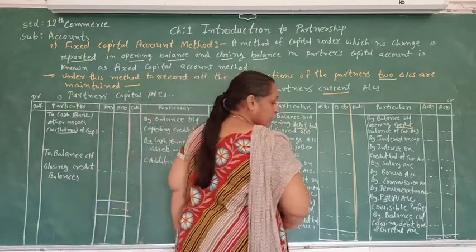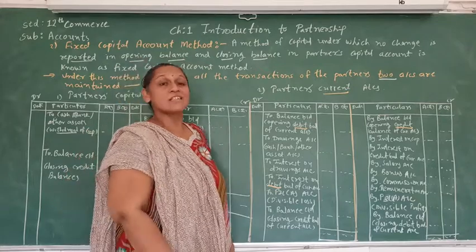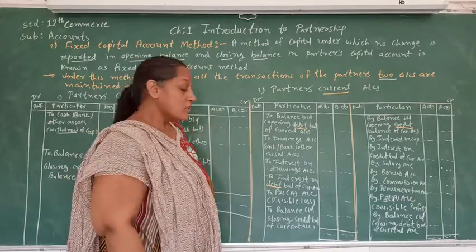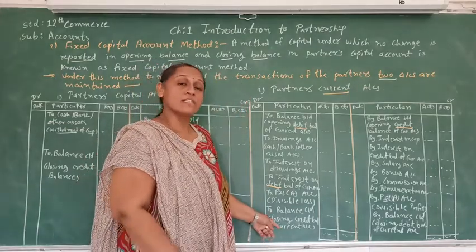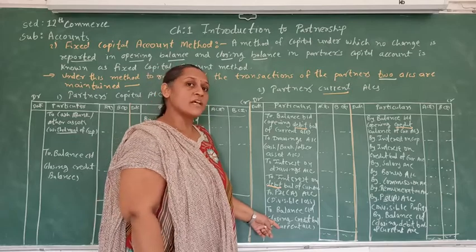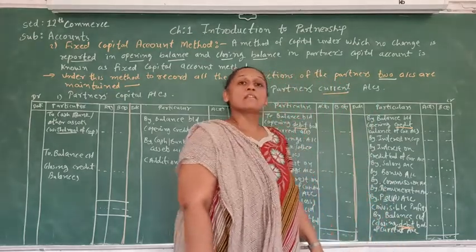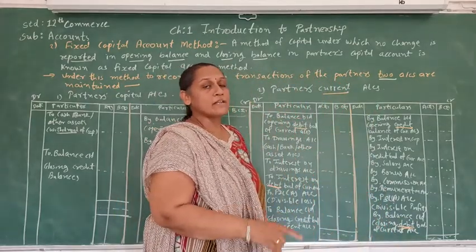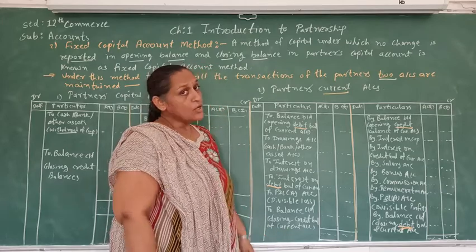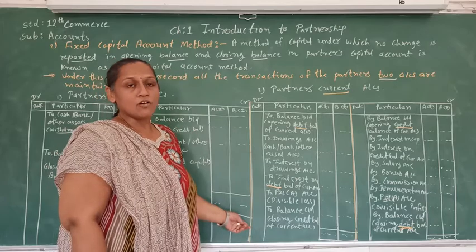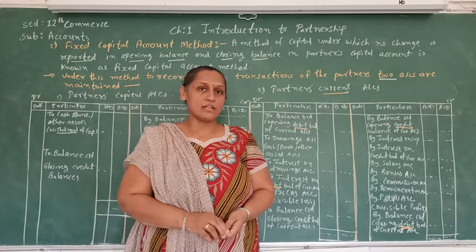After all entries, we find out the closing balance of the current account. The balance of the partner's current account can be debit or credit. If there is a credit balance of the partner's current account, it is written on the liability side of the balance sheet. If there is a debit balance of the partner's current account, it is written on the asset side of the balance sheet. This is how we prepare the partner's capital account under both methods — the fluctuating capital account method and the fixed capital account method.